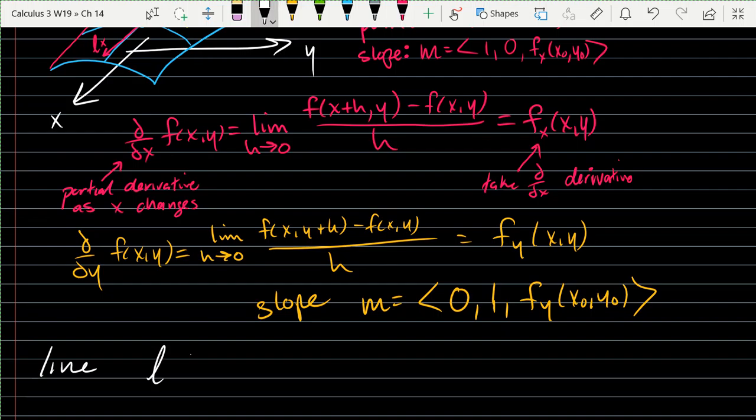And then, either case, your line L of T, it's always going to be P_0 plus MT. So that's our parameterized line. Start with a point, and then your slope is going to be a vector times T. So that's how we write equations of lines, parameterized equations of lines.